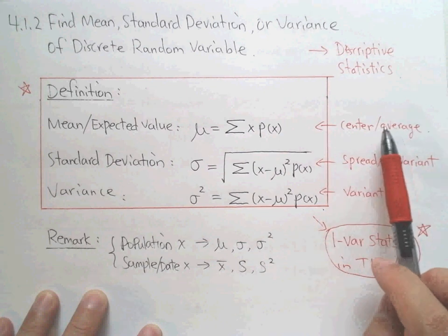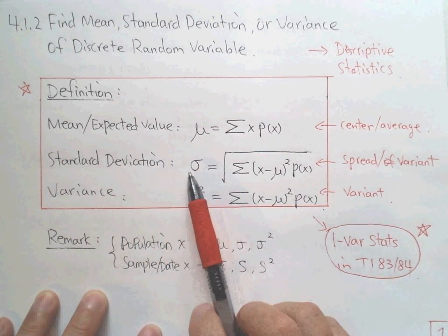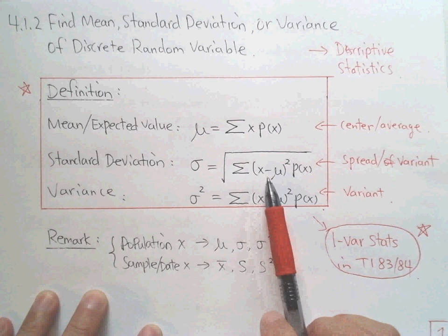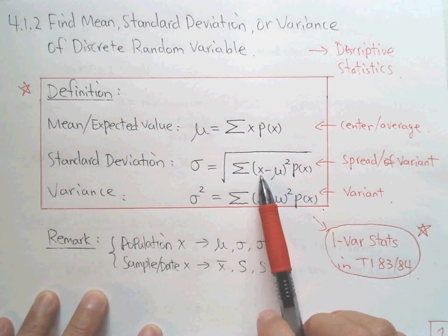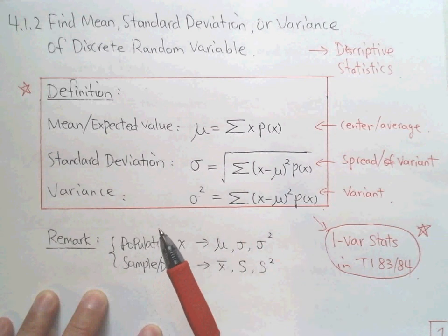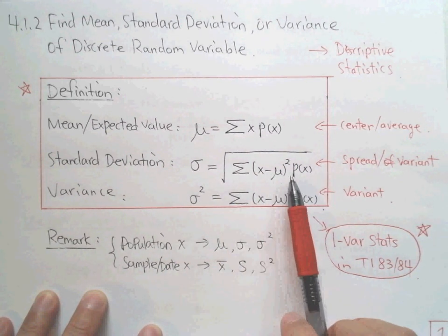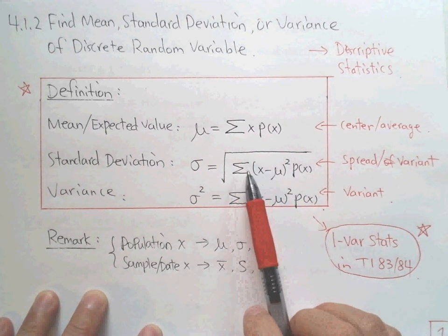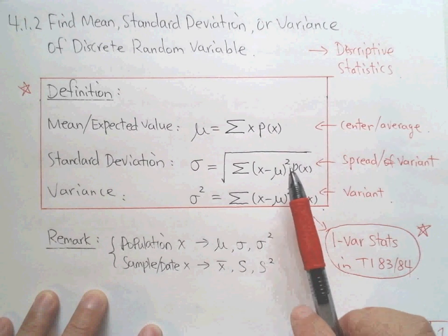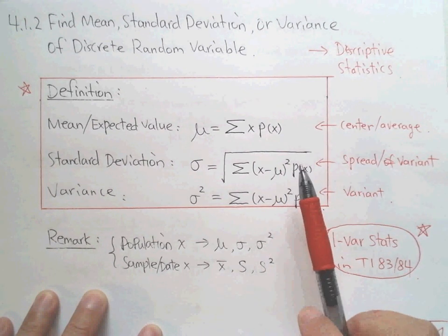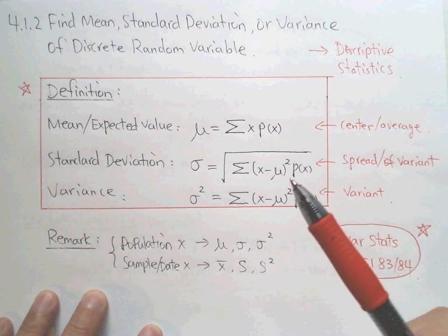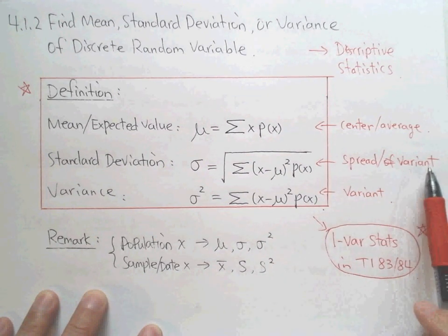The second is the standard deviation. We use sigma, and it is the square root of the summation. The sum involves each value x_i, mu is the mean, and we take the square of the distance from x to the mean — very similar to the definition you learned before — times the probability. Take the square root of that summation and you get the standard deviation, which tells you how spread out your random variable or distribution is.